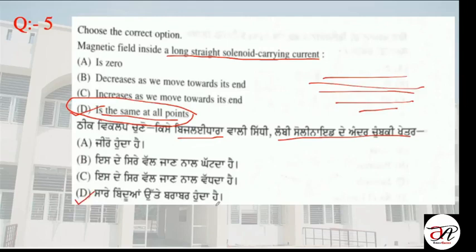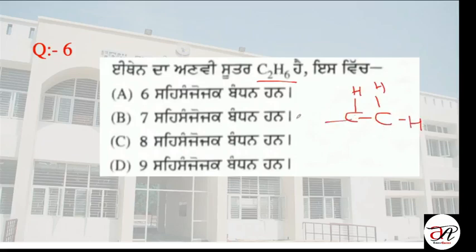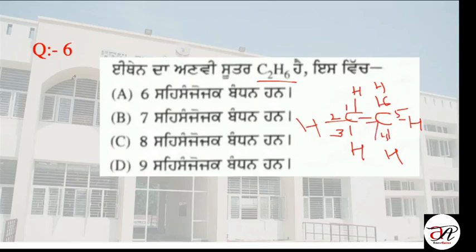The next question asks about the structural formula of C2H6. Writing out the structural formula of C2H6, we count the bonds: 1, 2, 3, 4, 5, 6, 7. There are 7 covalent bonds in C2H6.